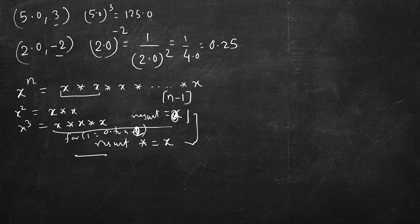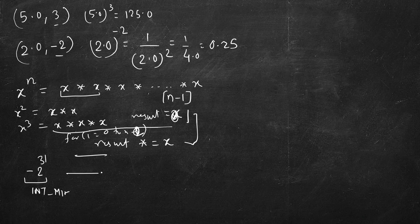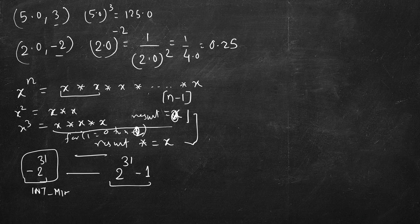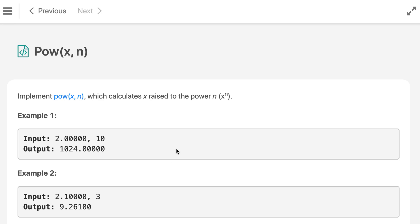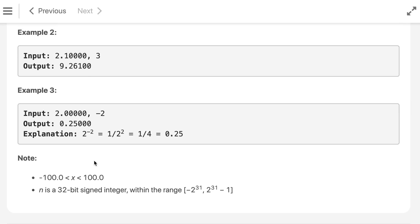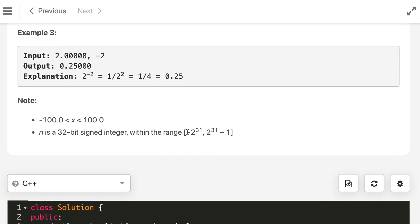This approach fails because n can be very large. The value of n ranges from minus 2 raised to the power 31 (int min) up to 2 raised to the power 31 minus 1 (int max). If you do that many multiplications, your test cases will definitely miss the time limit. First we will write this naive approach, see the test cases fail, and then optimize it to reduce the number of multiplications.